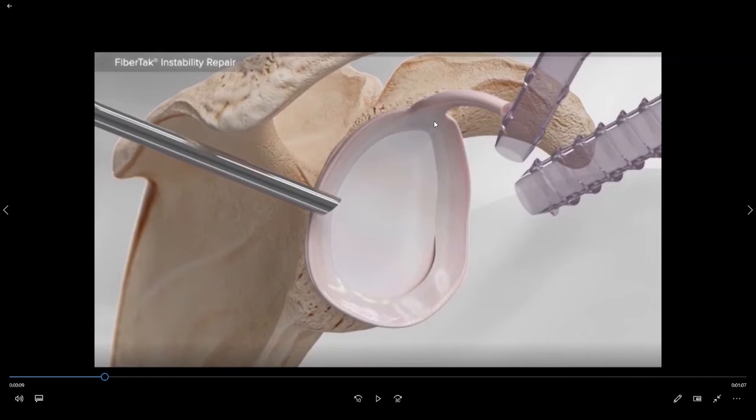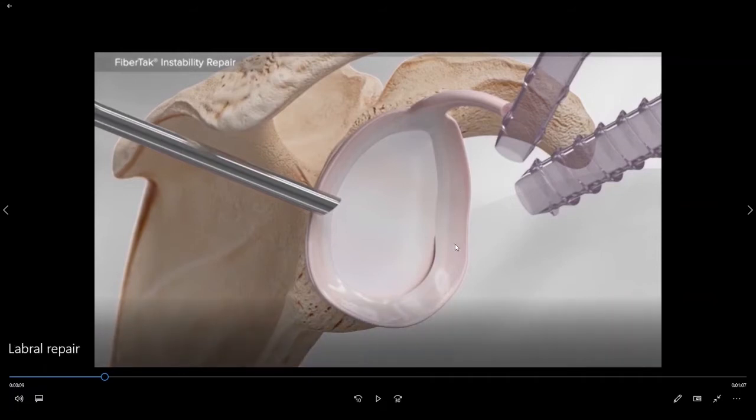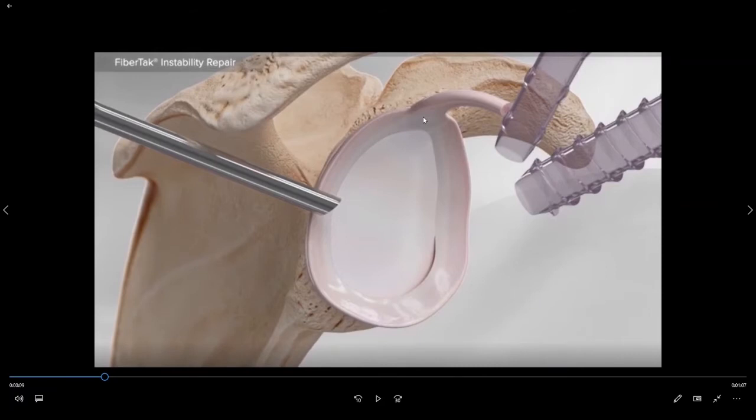Because the socket of the shoulder is relatively shallow compared to the large diameter of the ball, there is not a lot of constraint to the shoulder joint provided by the bone of the socket itself. And so one of the structures that helps to keep the ball centered in the socket is this rim of cartilage called the labrum. This cartilage is like the cartilage in your ear. It is soft and it can be damaged or tear.